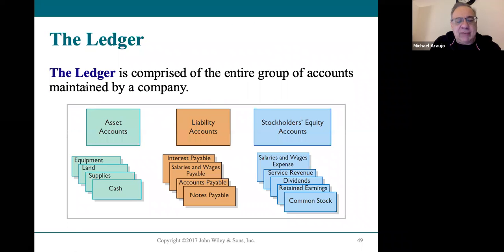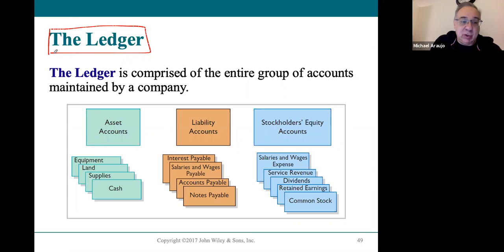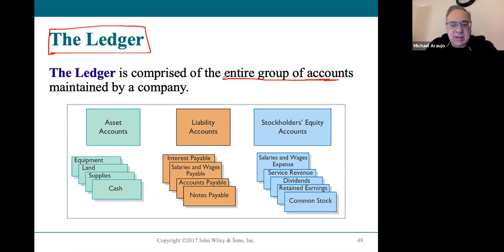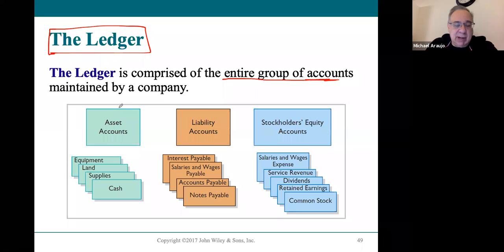The ledger is another really important book — it used to be a huge physical book, but it's now in electronic form. Basically, it's all the accounts of a company in one place. Everything that the company has for accounts will be in the ledger, so you can see anything that happened in each particular account.